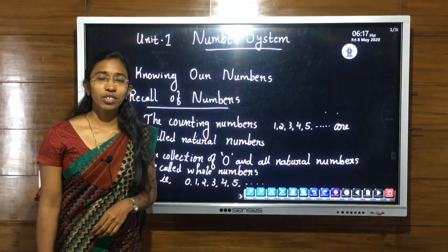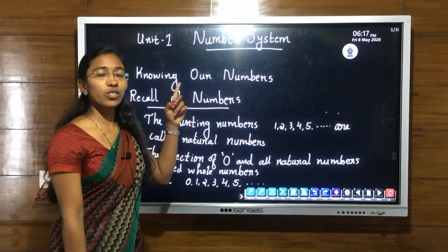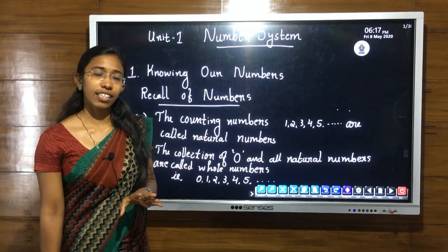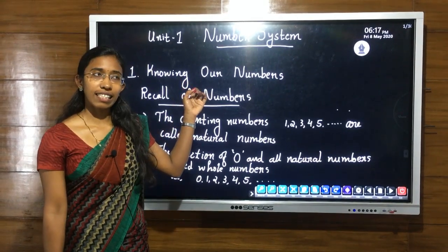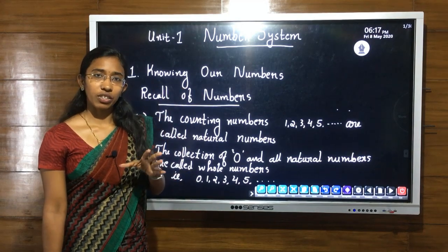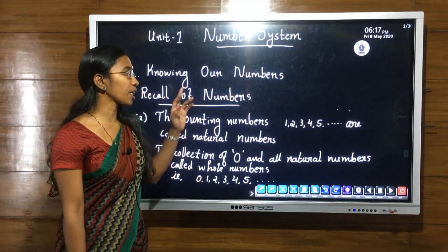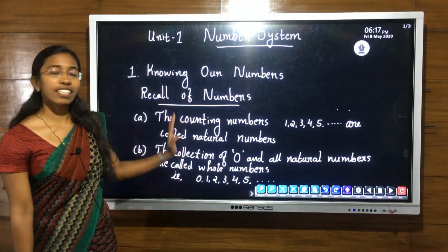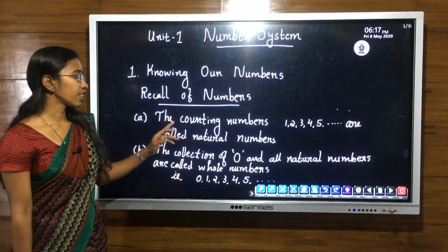Dear students, today we are going to study about the chapter number system. This is our first unit: number system. In this chapter, four parts are there. The first one is knowing our numbers, second is fractions, rational numbers, and so on. Today we are going to study about numbers. This is just a recall — we have already learned about this in our previous classes.